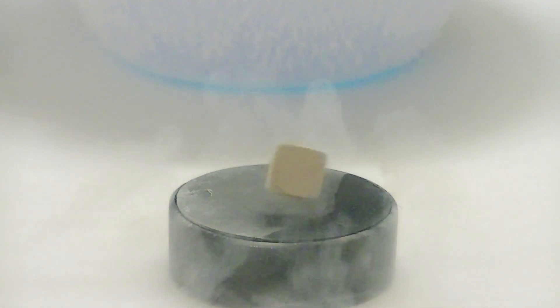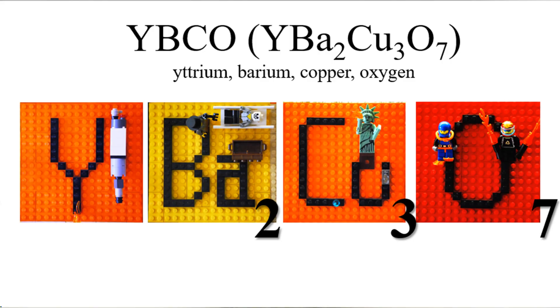The superconductors used in the experiments in this video are made up of a mixed metal oxide. This superconductor is made of the elements yttrium, barium, copper and oxygen. It's sometimes just called YBCO for short.